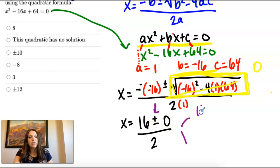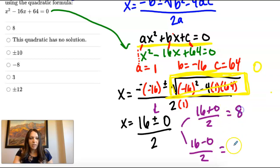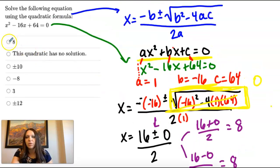You would do 16 plus 0, divided by 2, 16 minus 0, divided by 2. For this particular problem, though, that works out to be 8 on both of them. So this equation just has one solution at 8.